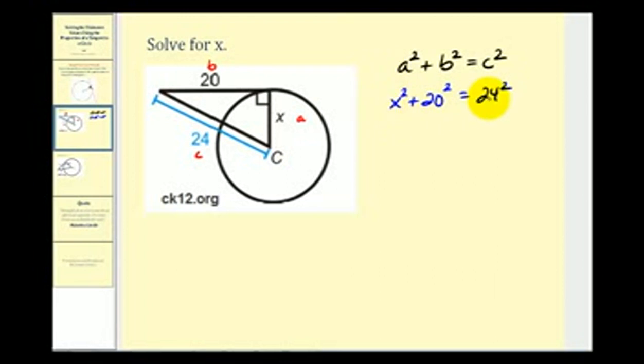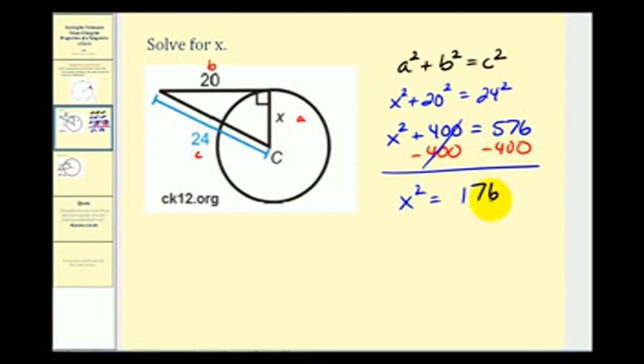So now we'll go ahead and simplify this and then solve. We'll have X squared plus 20 squared is 400 equals 24 squared is equal to 576. Now let's subtract 400 on both sides. So we'll have X squared equals 176.